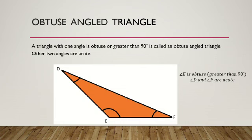Obtuse angled triangle — a triangle with one angle that is obtuse, or greater than 90 degrees, is called an obtuse angled triangle, and the other two angles are acute. In triangle DEF, angle E is obtuse, greater than 90 degrees, and angle D and angle F are acute, meaning less than 90 degrees.